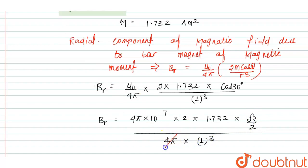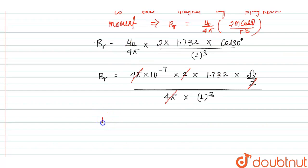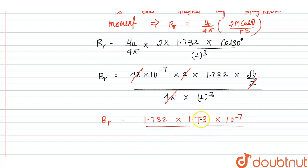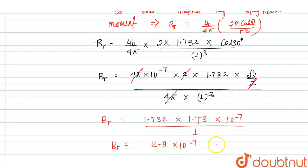The value of Br: since mu0 is equal to 4pi into 10 to the power minus 7, into 2 into 1.732 into 1.732 into cos 30 degrees, where cos 30 is root 3 by 2, upon 4pi into 1 cubed. So 4pi and 4pi cancel, 2 and 2 cancel. The value of Br equals 1.732 into root 3 into 10 to the power minus 7, which gives approximately 1.7 into 1.7, approximately equal to 2.9 into 10 to the power minus 7 Tesla.